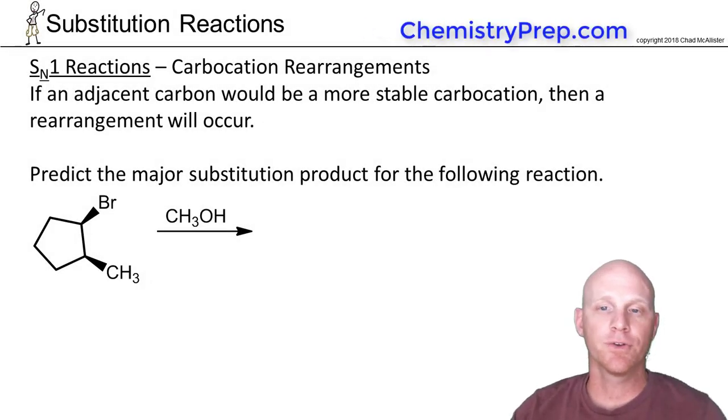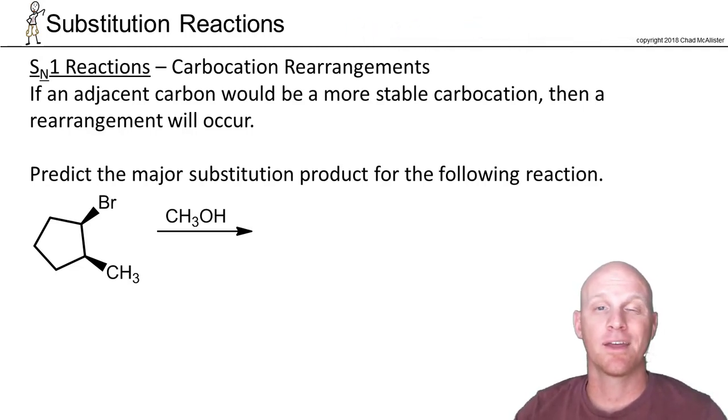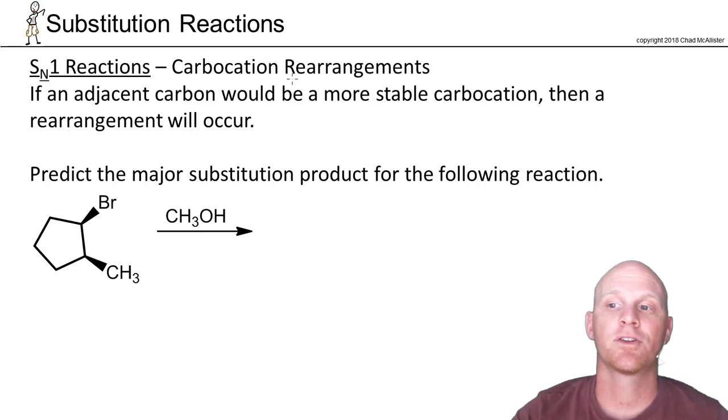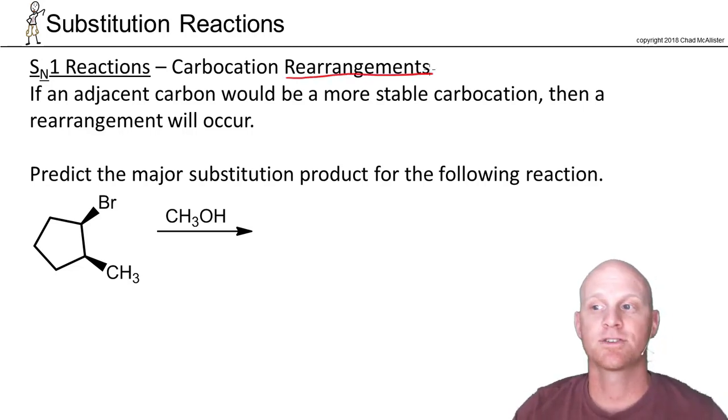Now I've got some bad news for you about SN1 reactions. We said it's all about the carbocation formed in the rate-determining step. The bad news is that carbocations can undergo what are called rearrangements. They don't always rearrange, but very often they do. The governing principle is that a carbocation has the option to rearrange to any adjacent carbon if it gets more stable as a carbocation.